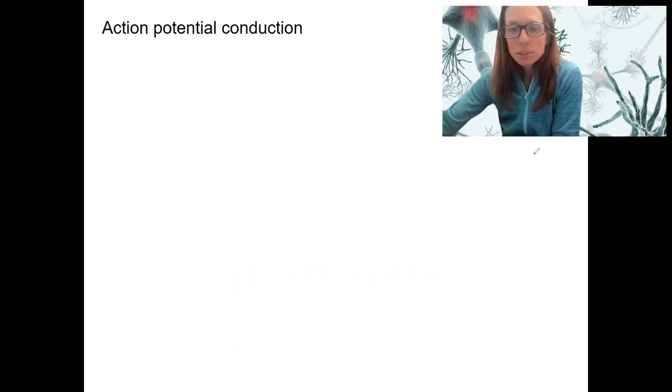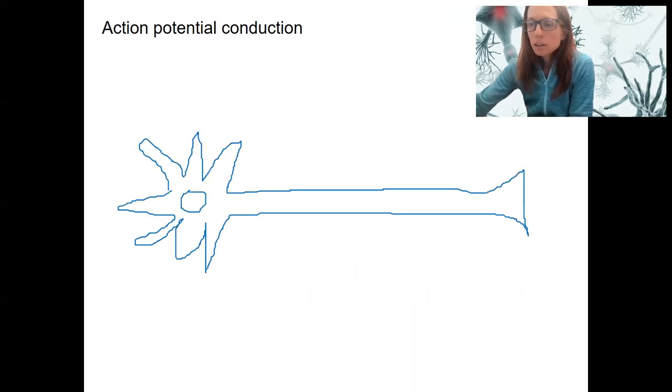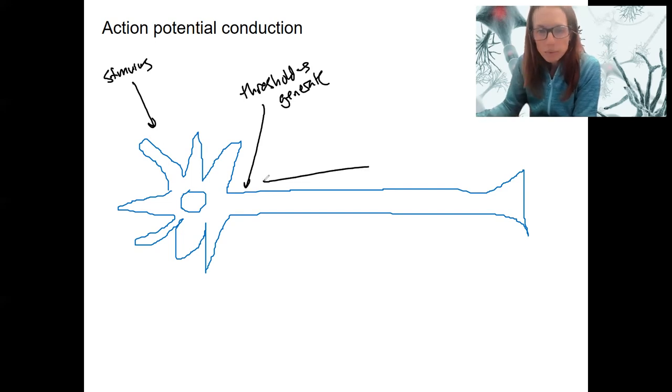So action potential conduction, we are going to be looking at how we get not only our initial stimulus, not only our generation of our action potential, we might have more than one stimulus to actually reach threshold to generate an action potential. Now we've got to look at how we get it down that way. This is conduction.